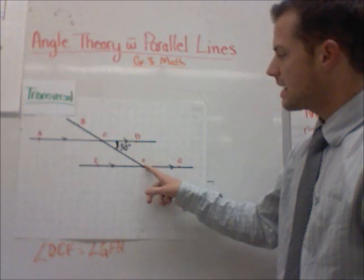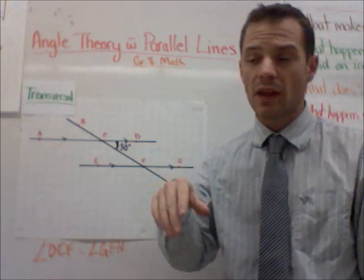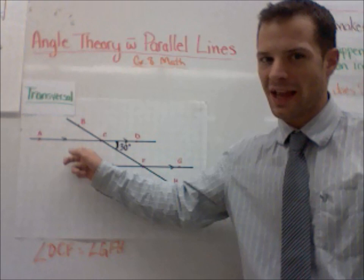So here I have angle DCF labeled at 30 degrees. Now, we know, because this is a straight line, we already know that a straight line is 180 degrees. If I've given you a 30 degree angle, and there's only one other angle to make up that straight plane, we just have to subtract.